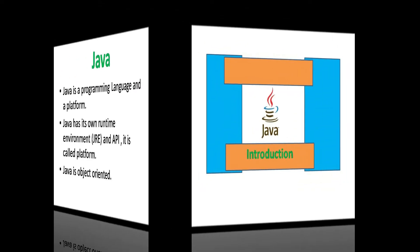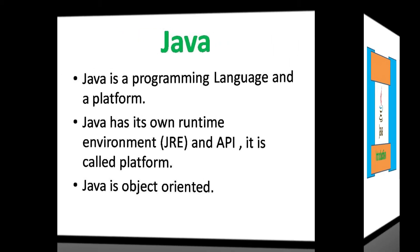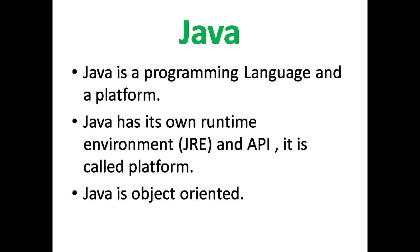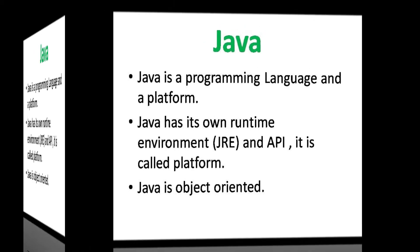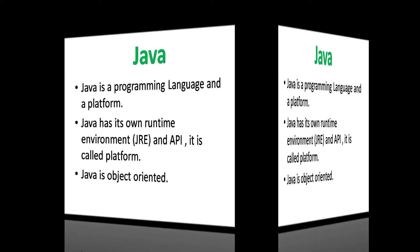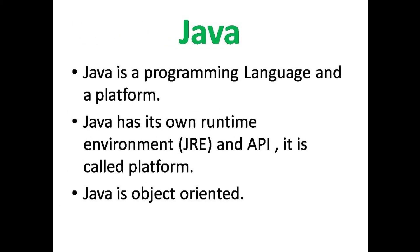What is Java? Java is a programming language and a platform also. What is platform? Any hardware or software environment in which a program runs is known as platform. In my definition, I have mentioned it as a platform.